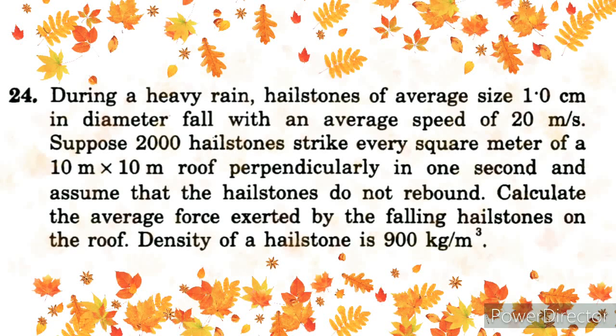Center of Mass and Linear Momentum, Numerical 24. During a heavy rain, hailstones of average size 1 cm in diameter fall with an average speed of 20 m/s. Suppose 2000 hailstones strike every square meter of a 10 m × 10 m roof perpendicularly in 1 second, and assume that the hailstones do not rebound. Calculate the average force exerted by the falling hailstones on the roof. The density of the hailstones is 900 kg per meter cube.